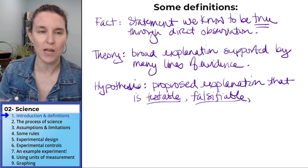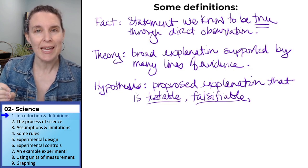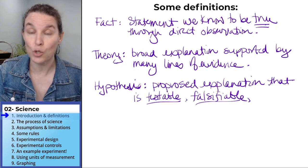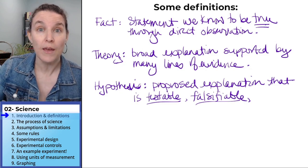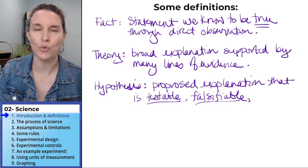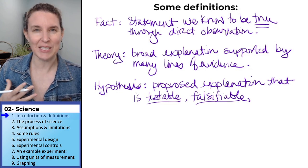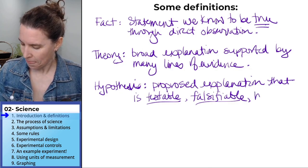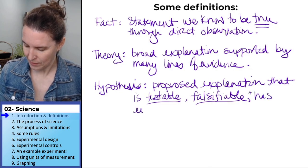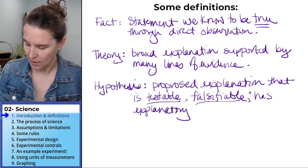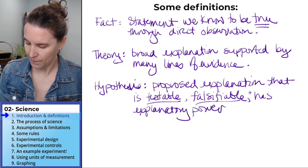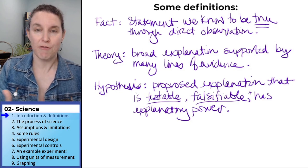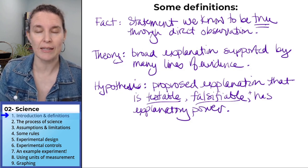And it's falsifiable. And we're going to talk about this a little bit more, but I just want to throw it at you. That means that you can provide evidence that your hypothesis is not true. You know what you're looking for that will tell you that, oh, that is not true. And it has explanatory power. It tells you something about what you already know. So a hypothesis is a really specific type of thing that we build or we generate in the sciences.